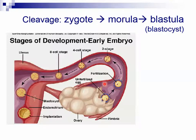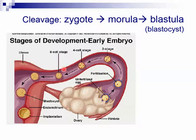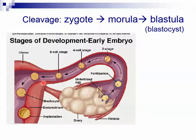If I ask you on a test where fertilization occurs, you want to say in the fallopian tubes or in the oviduct. The zygote immediately starts undergoing cleavage division — two cell, four cell, eight cell, solid ball stage the morula, then the hollow ball stage the blastocyst. This is the stage that implants in the human female — it digs into the inner lining of the uterus called the endometrium.